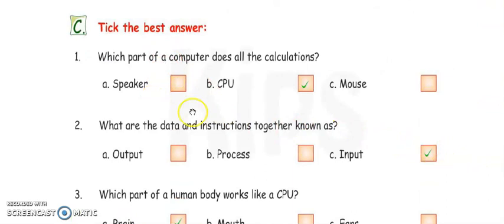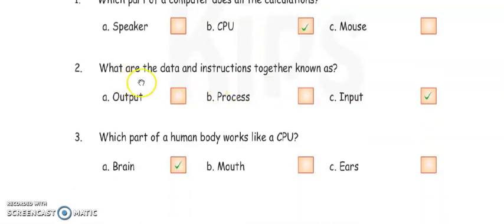Now next, exercise C. Tick the best answer. You have to tick one option. Which part of the computer does all the calculation? Speaker, CPU, or mouse? It is CPU, because CPU is the processing unit, is the brain of the computer.